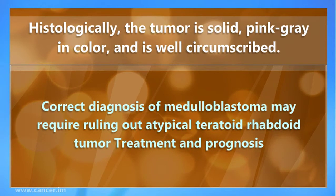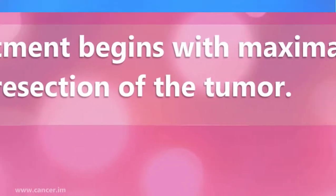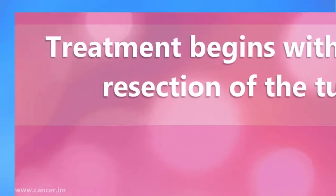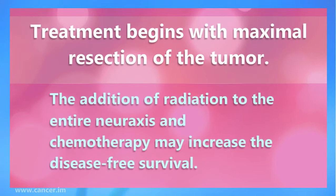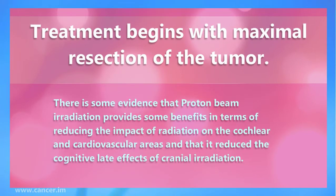Correct diagnosis of medulloblastoma may require ruling out an atypical teratoid rhabdoid tumor. Treatment begins with maximal resection of the tumor. The addition of radiation to the entire neuraxis and chemotherapy may increase disease-free survival.